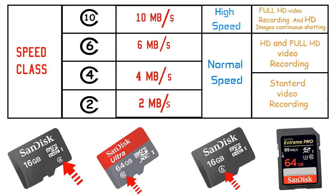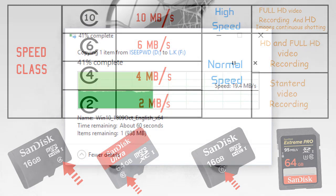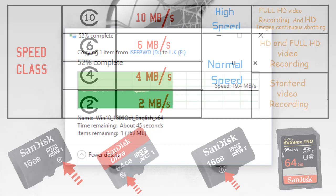Now let's look at speed classes. Class 2 has a transfer speed of 2MB per second, Class 4 has 4MB per second, Class 6 has 6MB per second, and Class 10 has 10MB per second.